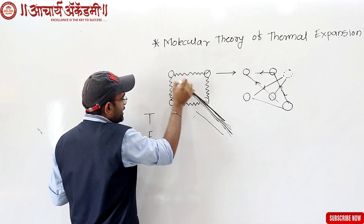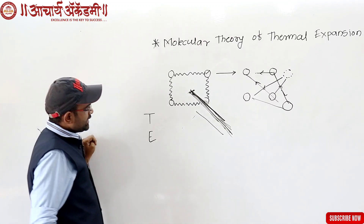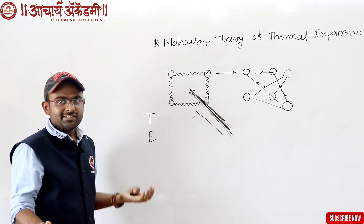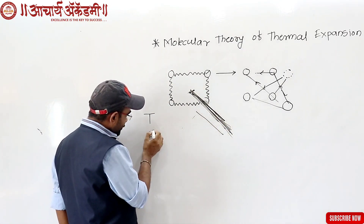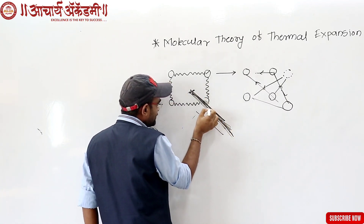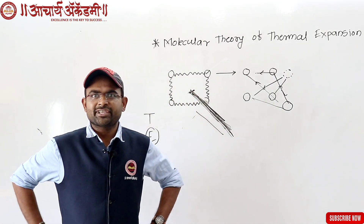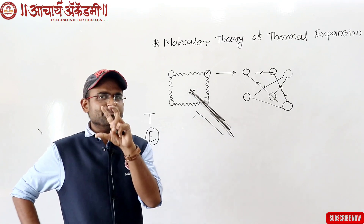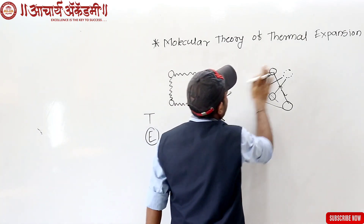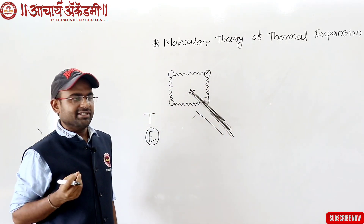The repulsive force: how does the distance from outside behave? From outside, the potential energy rises steeply — steeply — it rises steeply. This leads us to a simple potential energy graph.